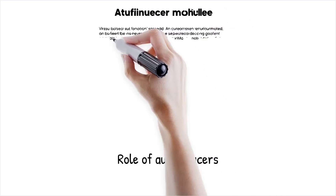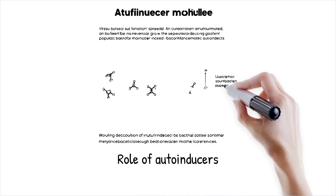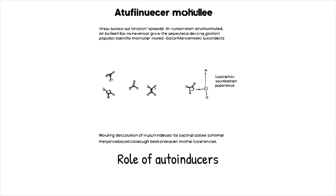Auto-inducers are the signaling molecules central to quorum sensing. These molecules can be species-specific, such as acyl homoserine lactones in gram-negative bacteria, or universal, such as auto-inducer 2 used for interspecies communication.